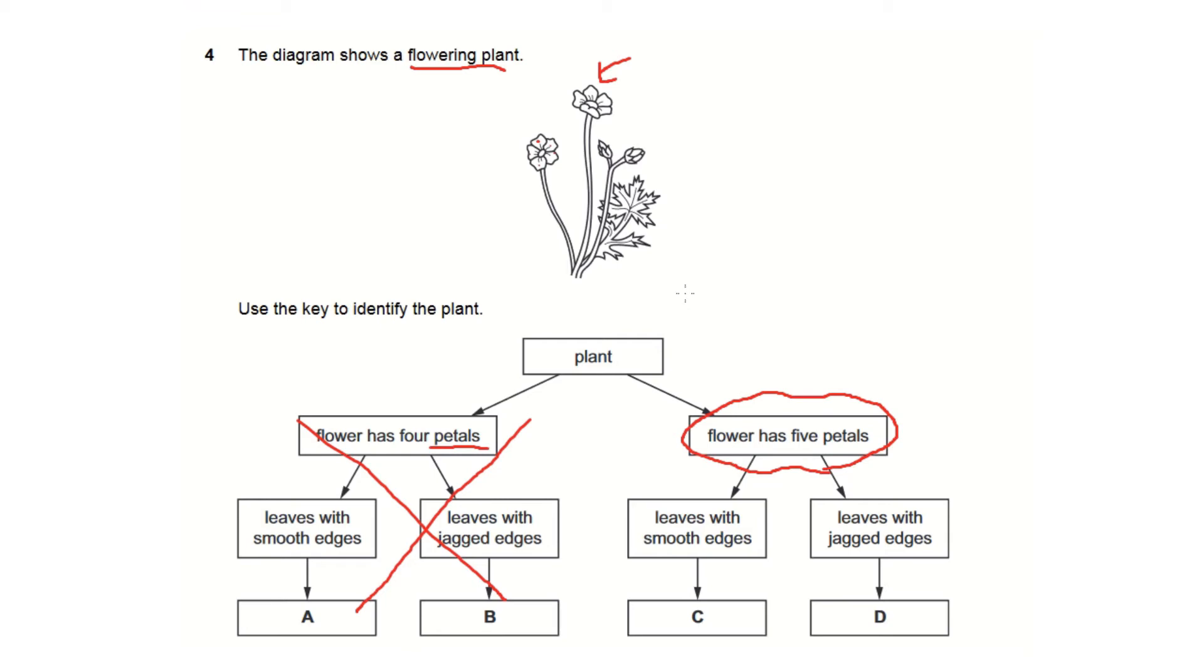Then we have to look at the leaves here. Do they have a smooth edge or a jagged edge? I'm pretty sure I'll call this over here a jagged edge, which means that our right answer is D.